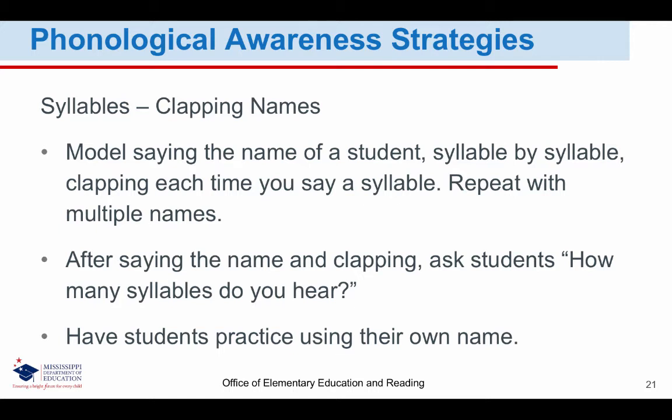Another strategy is to identify syllables by clapping out names. Model saying the name of a student syllable by syllable, clapping each time you say a syllable. Repeat with multiple names. After saying the name and clapping, ask students how many syllables do you hear, then have students practice using their own name. Some students cannot keep the rhythm by clapping — another way to identify syllables is to jaw drop: by placing a hand under their chin as they say the name, each time their chin hits their hand it counts as a syllable. Older students who might feel awkward clapping can tap two fingers on a desk. Once students can count syllables in names, have them practice counting syllables in other familiar words. This activity will help English learner students with correct pronunciation as well as identifying word parts, which will also assist in decoding, spelling, and understanding.